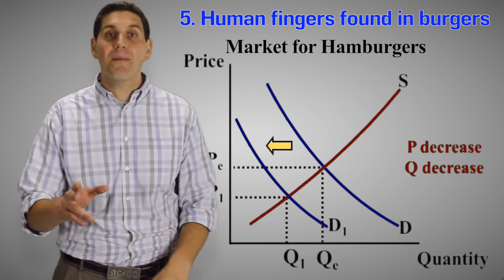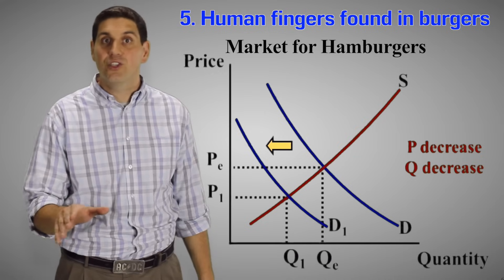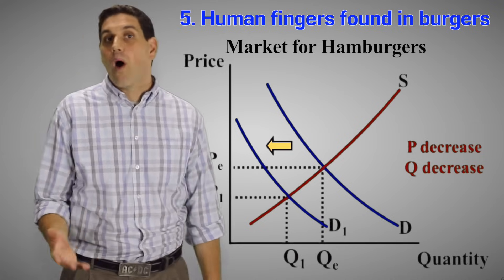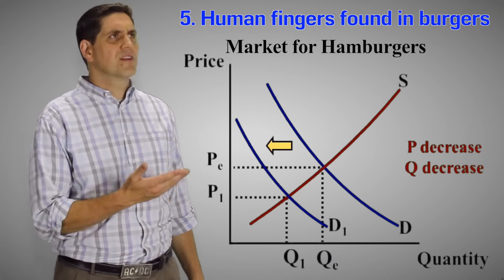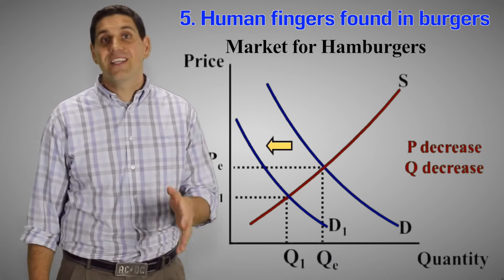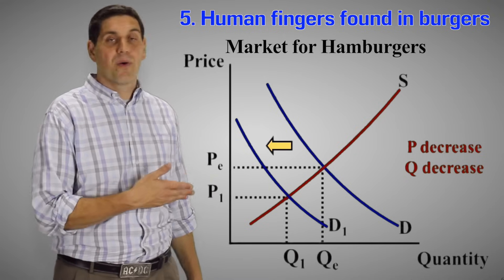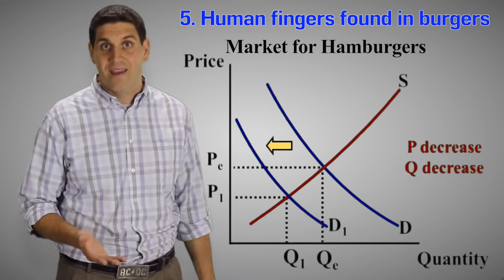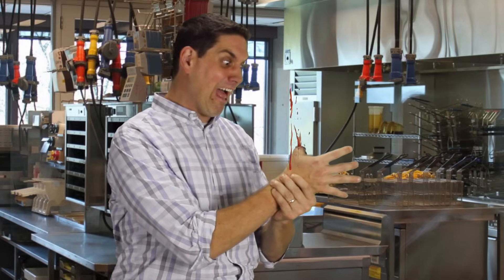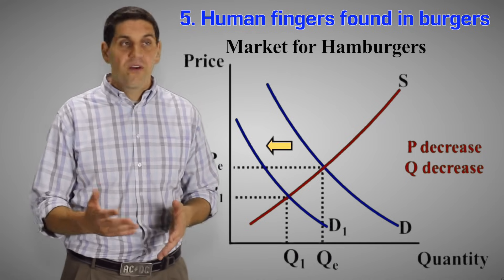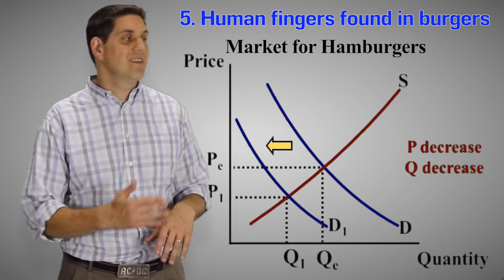So a real quick story. One time I was doing that example in class and I had a student who said that it wasn't going to be demand. It was going to be a supply shifter. The supply would go down. So I walked up to him. I said, well, why do you think it's going to be a supply shifter, not a demand shifter? And this innocent student says, well, if your workers don't have any fingers, then that means they can't produce as much. And so that's going to decrease supply. Well, it's definitely going to be a demand shifter. If there's fingers found in food, people aren't going to buy it. Demand is going to decrease.